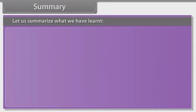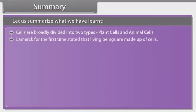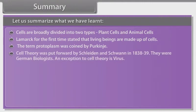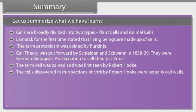Cells are broadly divided into two types: plant cells and animal cells. Lamarck was the first to state that living beings are made up of cells. The term protoplasm was coined by Purkinje. Cell theory was put forward by Schleiden and Schwann in 1838 to 1839; they were German biologists. An exception to cell theory is the virus. The term cell was coined and first observed by Robert Hooke.